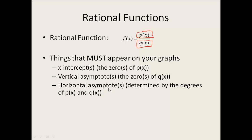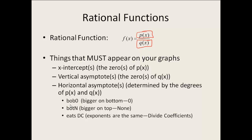Our horizontal asymptote is determined by comparing the degrees of p of x and q of x — remember degree is the highest exponent. We have a mnemonic: BOBO BOTTEN EATS DC. BOBO stands for bigger on bottom, and the horizontal asymptote is going to be zero. BOTTEN means bigger on top — there is no horizontal asymptote. EATS DC means if the exponents are the same, we divide the leading coefficients.